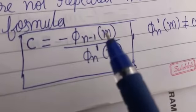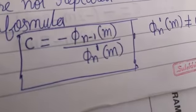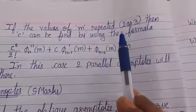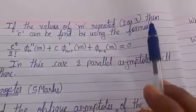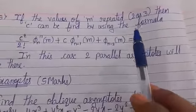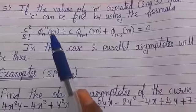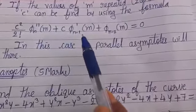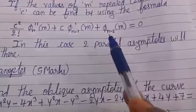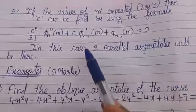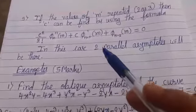If the values of m are repeated 2 or 3 times, then c can be found using the formula: (c²/2!)φₙ''(m) + c·φ_{n-1}'(m) + φ_{n-2}(m) = 0. In this case, you will get the asymptotes in pairs.